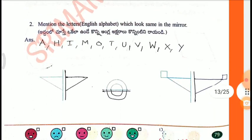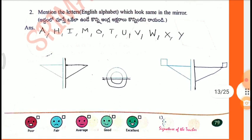Second one: Mention the English alphabets which look the same in the mirror. Answer: A, H, I, M, O, T, U, V, W, X, Y.